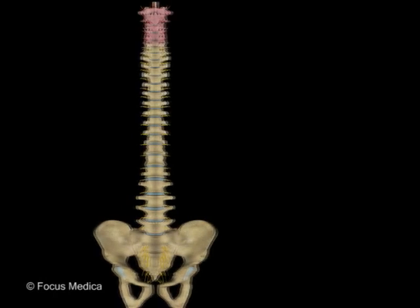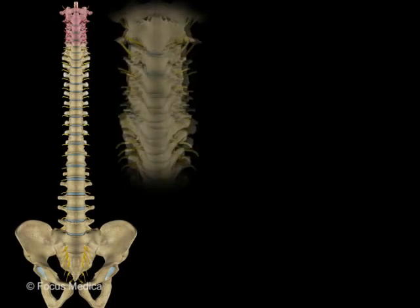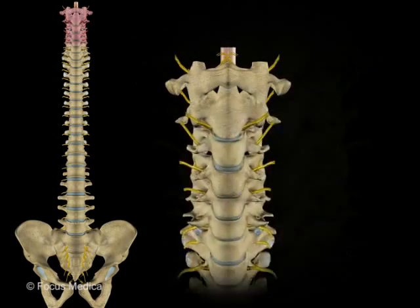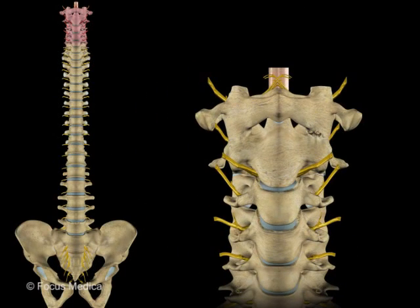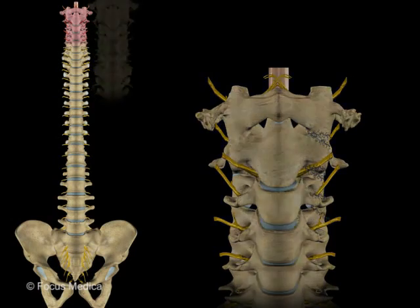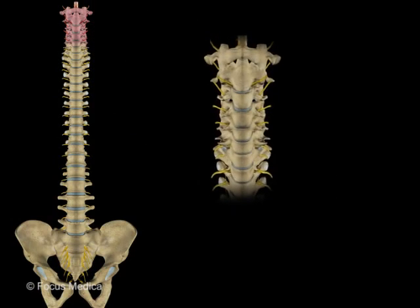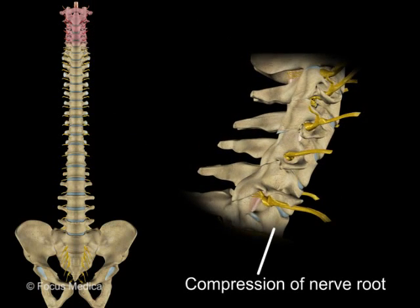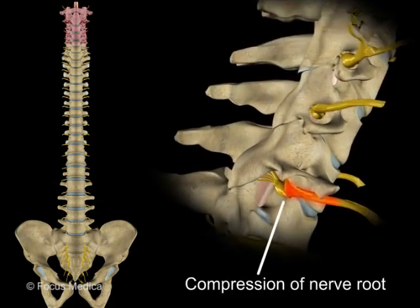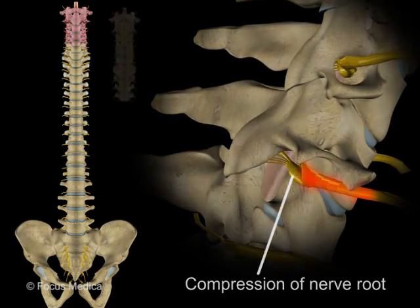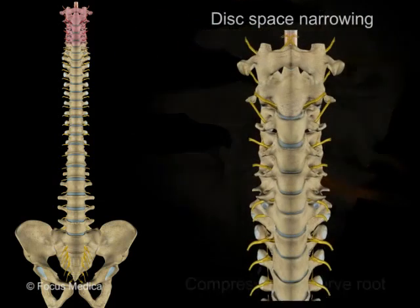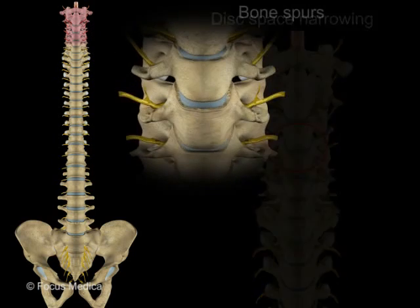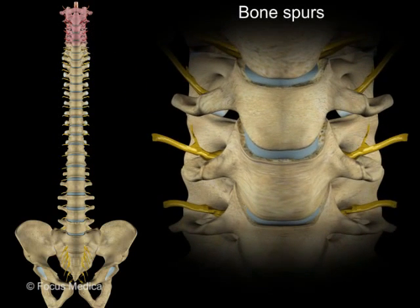Spondylosis results from degeneration of the intervertebral discs and facet joints of the cervical spine and other parts of the vertebral column due to stretching or compression of cervical nerve roots, disc space narrowing, bone spurs, etc.